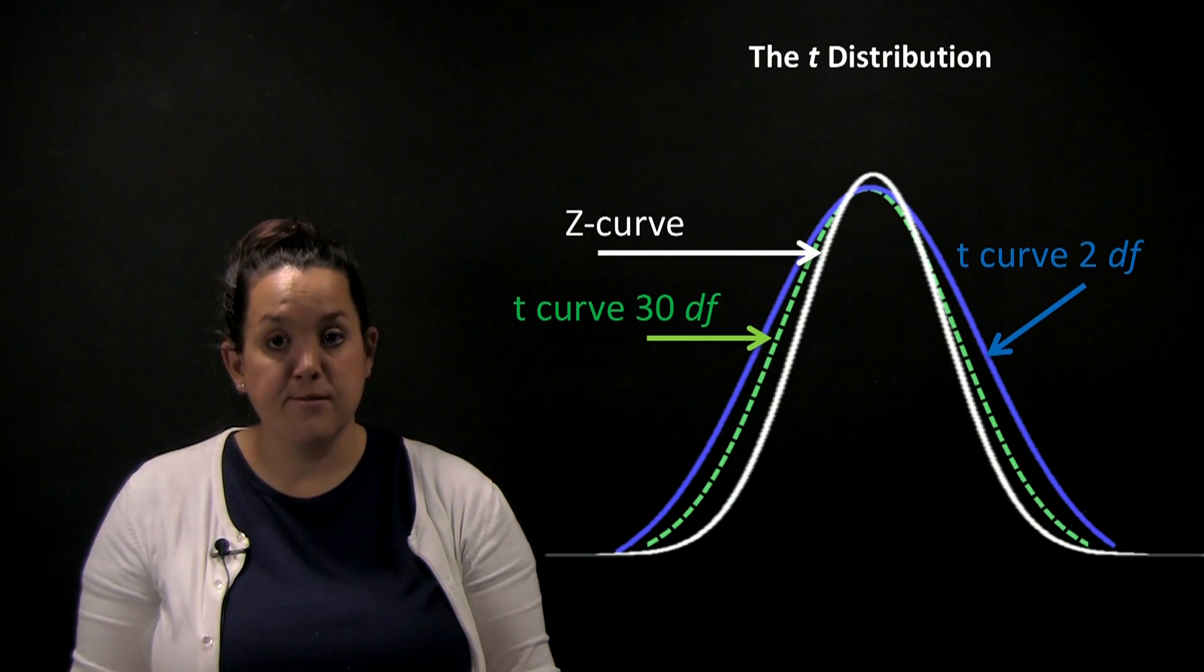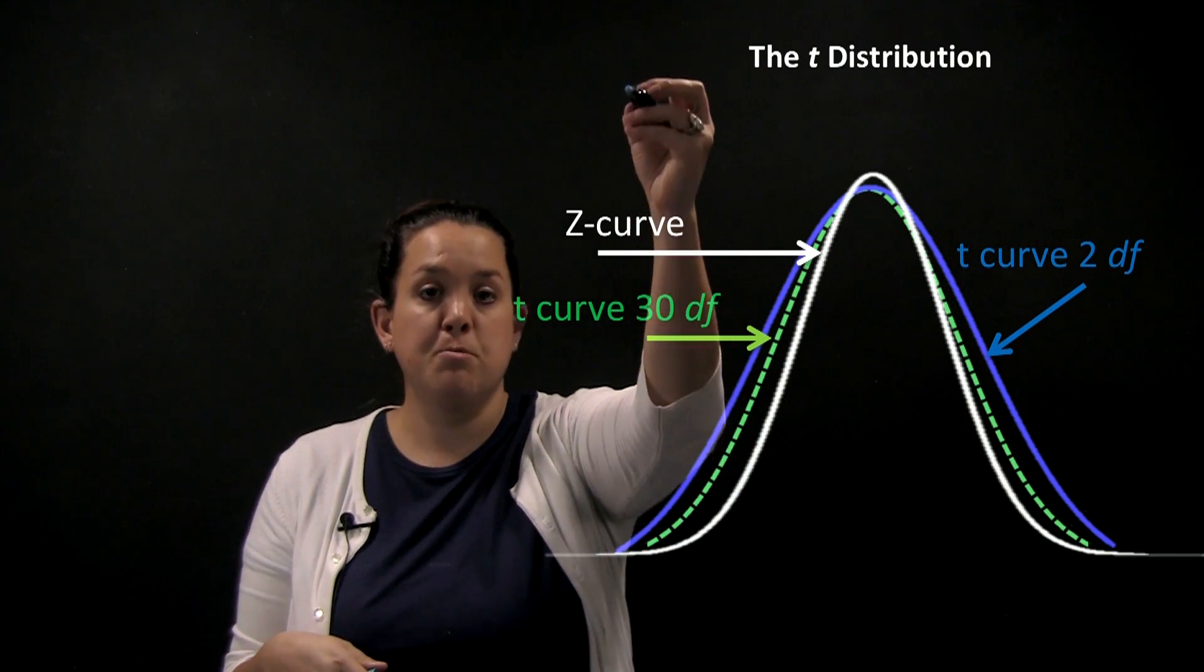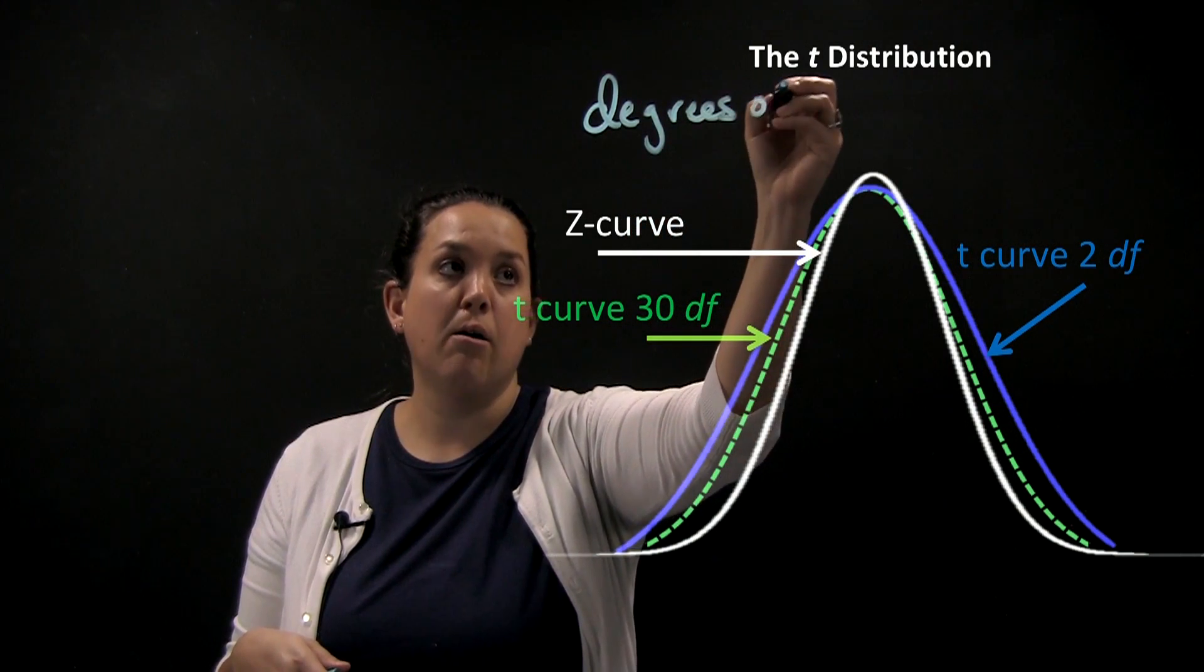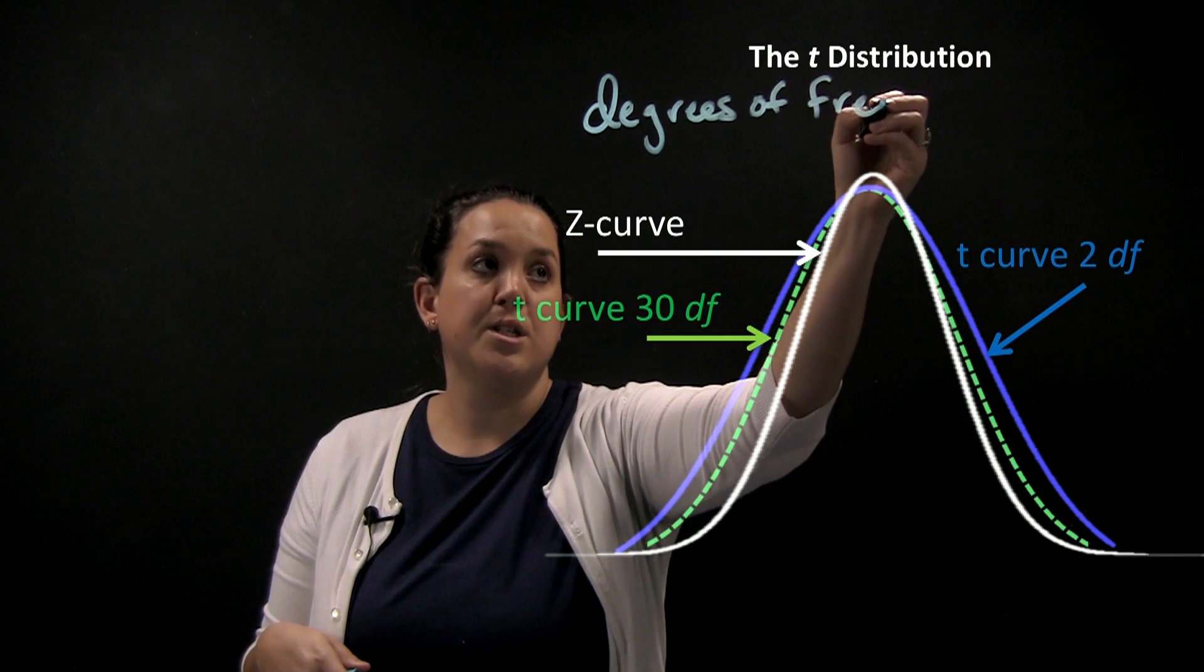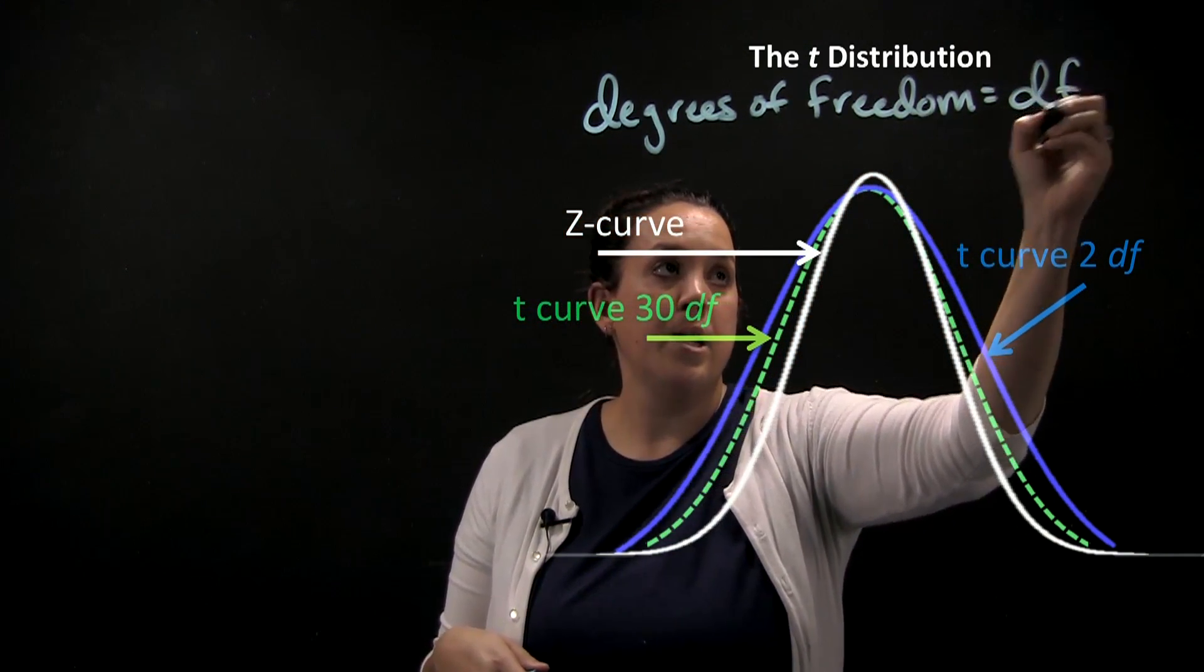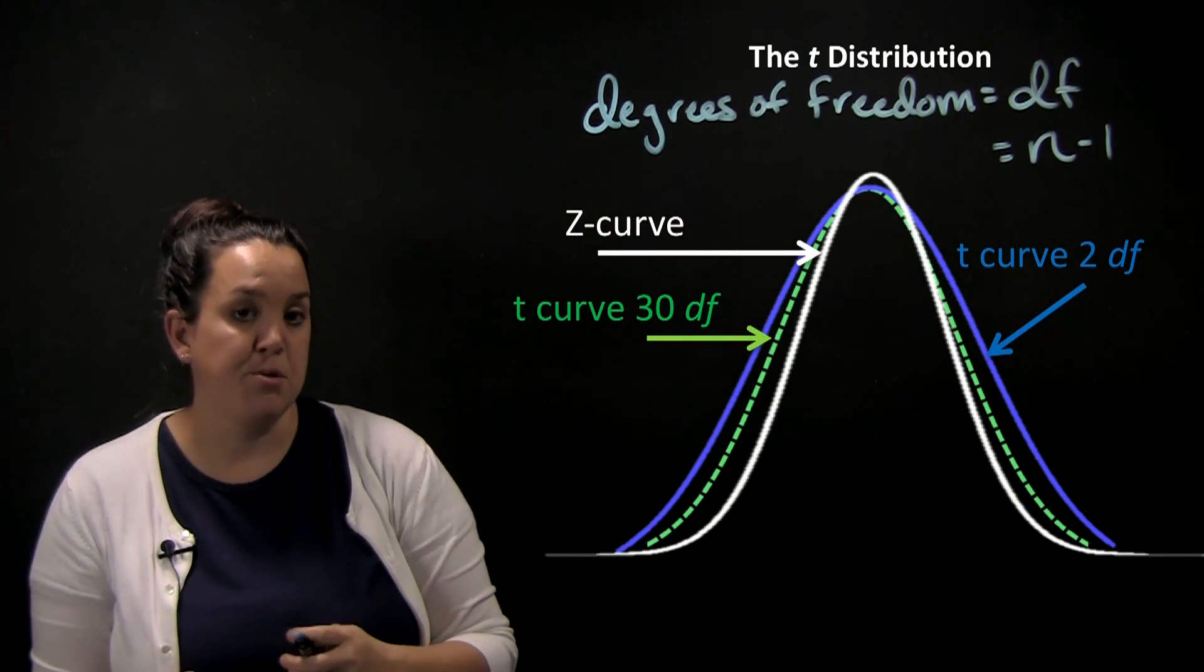Those t-curves, the height and the steepness of the curve, is dependent on this measurement called degrees of freedom. Degrees of freedom is very easy to calculate. It's going to take n and subtract 1 from it. Remember that n is sample size.